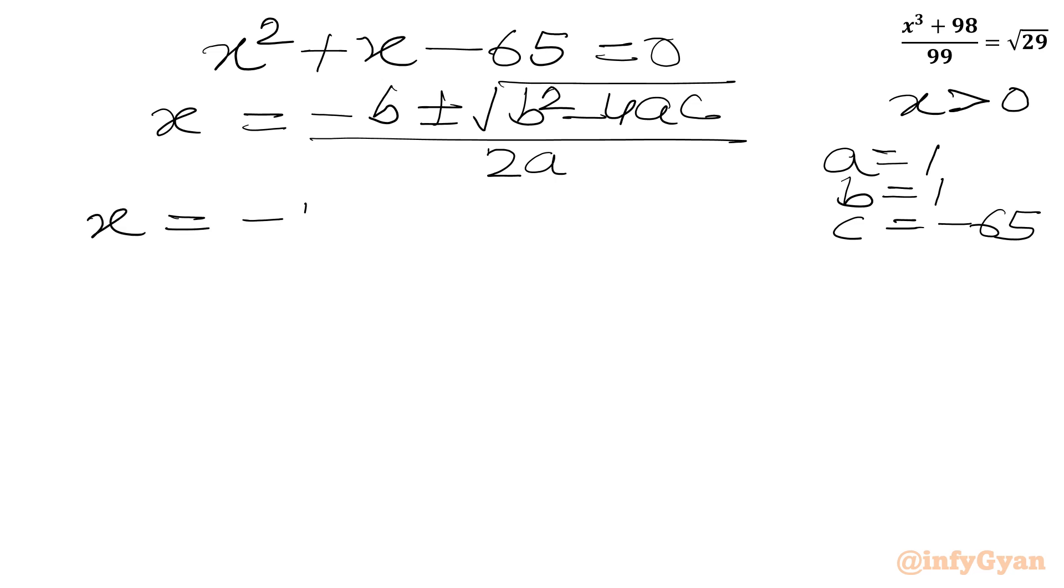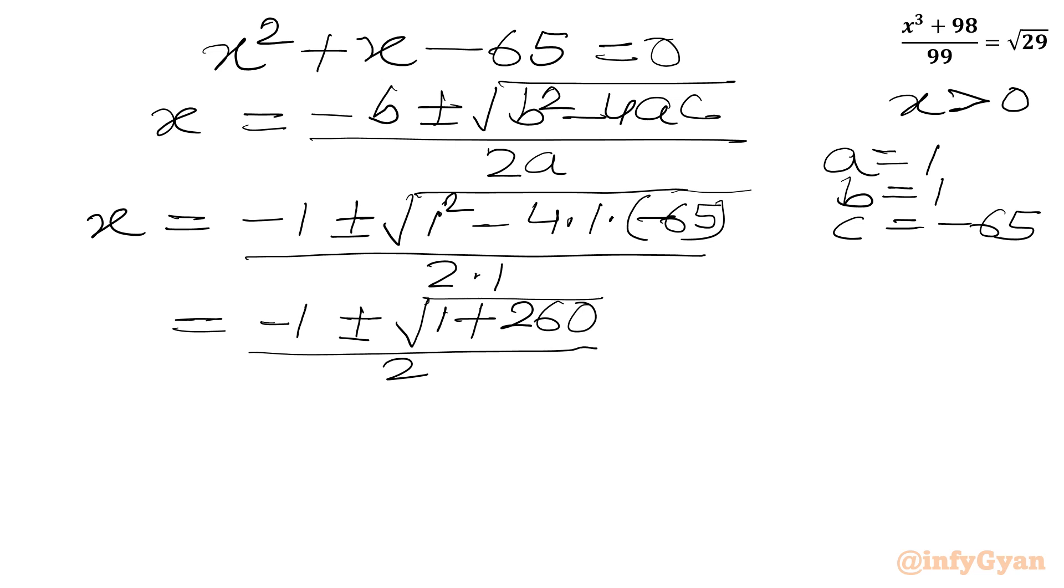So x will become minus b, so minus 1, plus minus square root of b squared, so 1 squared, minus 4 times 1 times minus 65, over 2 times 1. So we can write minus 1 plus minus square root of 1 plus 260 over 2.